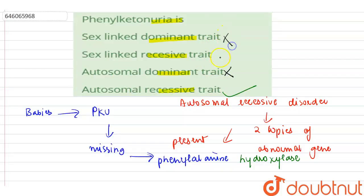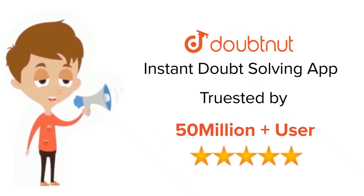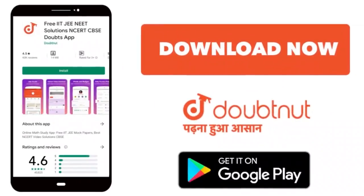Autosomal genes are located on non-sex chromosomes, not on sex chromosomes. So phenylketonuria is autosomal recessive trait. Thank you. For class 6-12, IIT, and NEET level, trusted by more than 5 crore students, download Doubtnet app today.